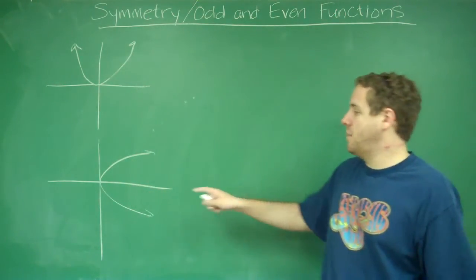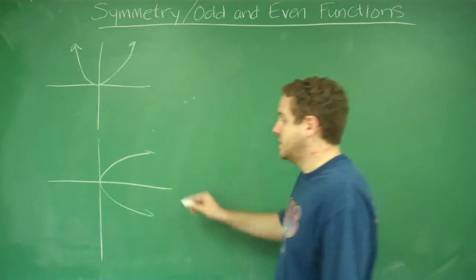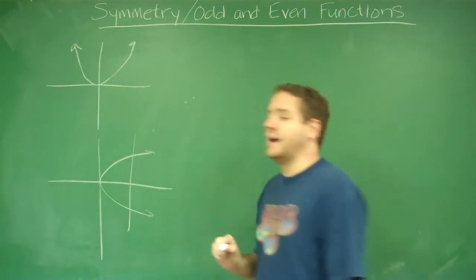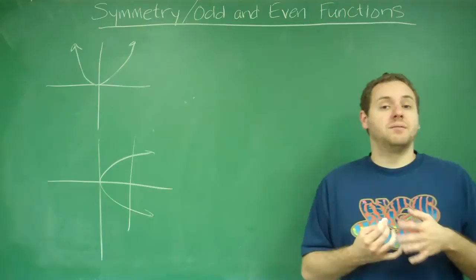Note that if you have something that's symmetric about the x-axis, that's not going to be a function, because it doesn't pass the vertical line test. So symmetric across the x-axis means you don't have a function.